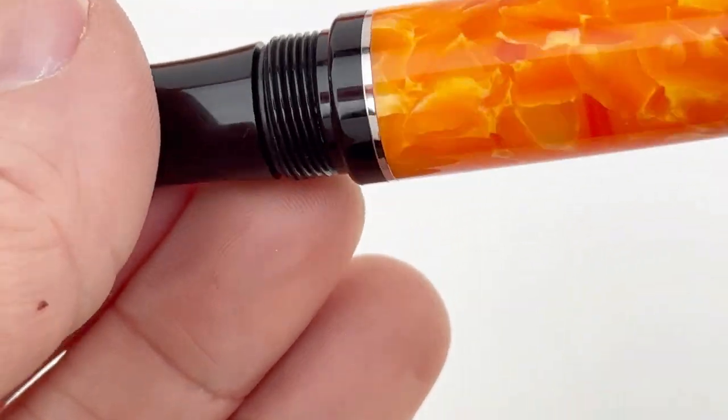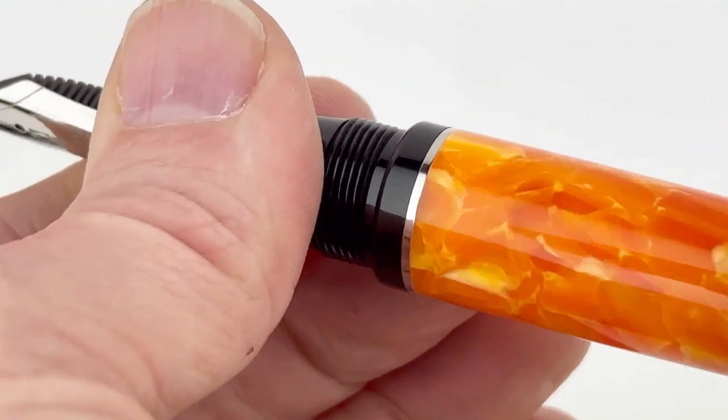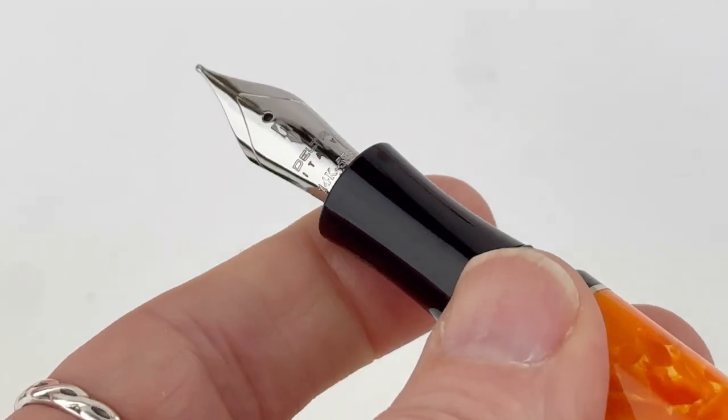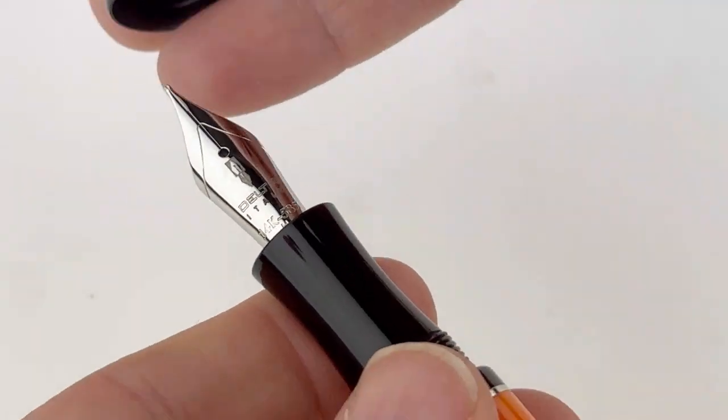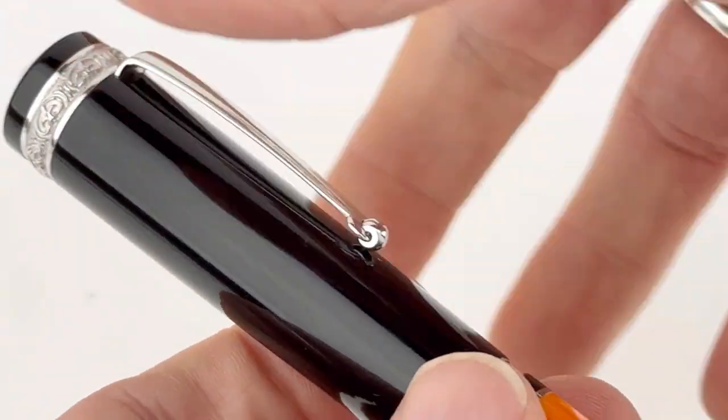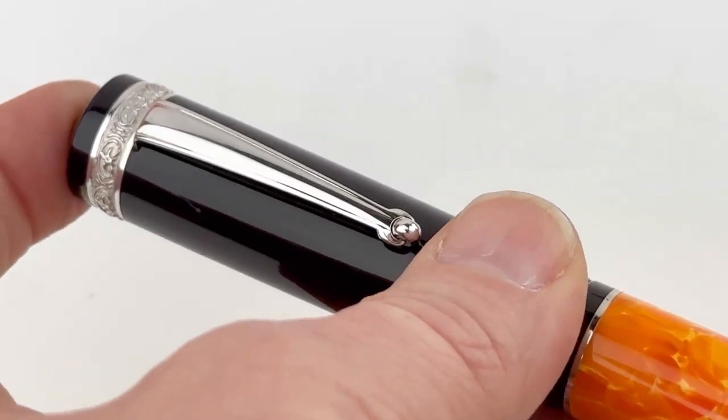Each of these pens features beautiful resins that are turned by hand from solid bar. The nib is branded with the Delta logo, and it's a number 6 size.